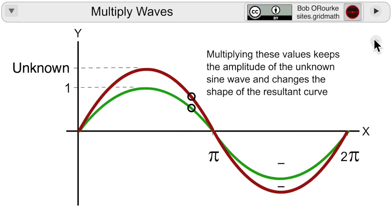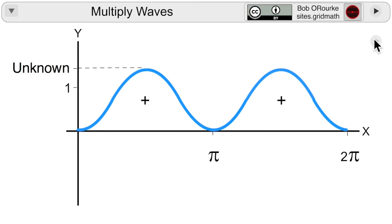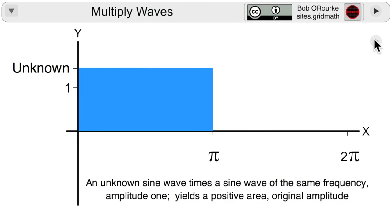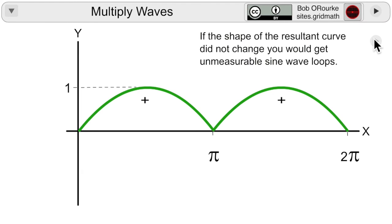For waves of the same frequency, you get an all positive symmetric image like this. Change of shape is important. The new shape can be cut up like a jigsaw puzzle and put back together again as a rectangle with a measurable area.